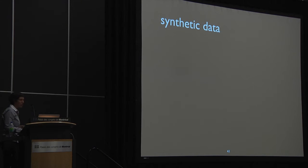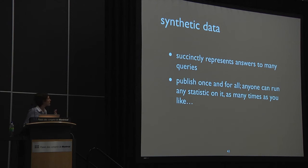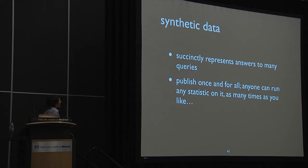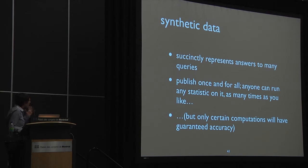This is an information-theoretic result — not an efficient algorithm, but a proof of concept that we can simultaneously get accurate answers to an exponential number of queries. In doing so, we produce synthetic data: the output isn't just answers to queries but takes the form of data — a histogram over possible database entries. Synthetic data is nice because it's a succinct representation of answers to many questions. Post-processing is no problem, so you can publish it and let anybody run statistics on it — though accuracy is only guaranteed for the queries you anticipated.